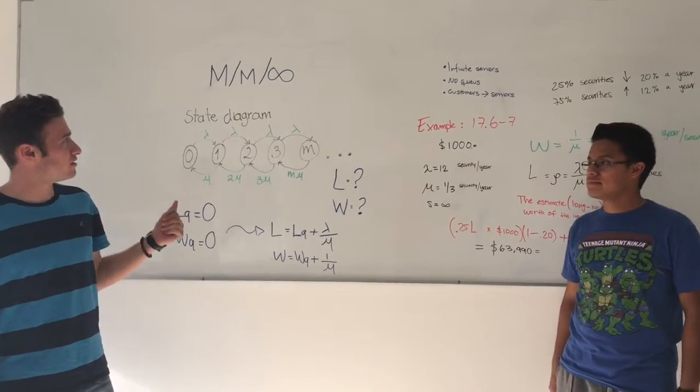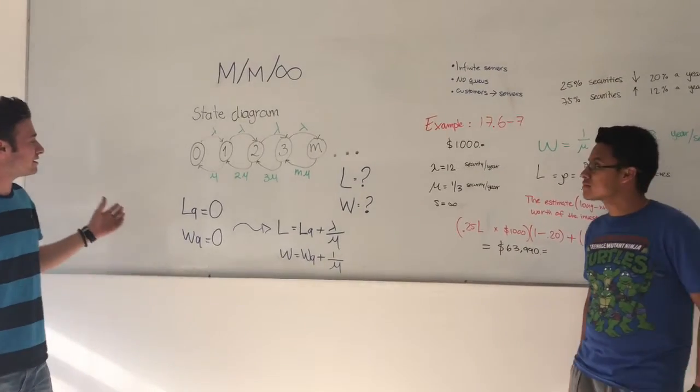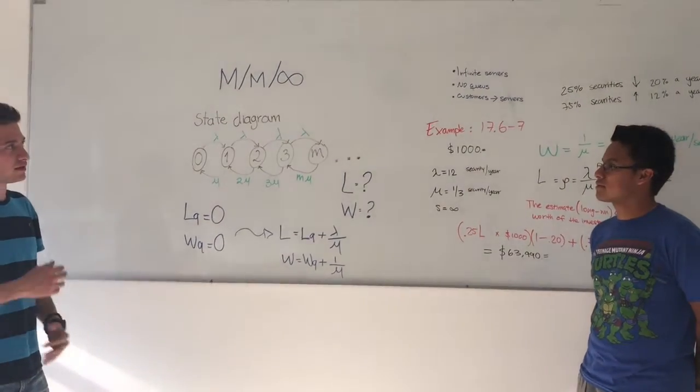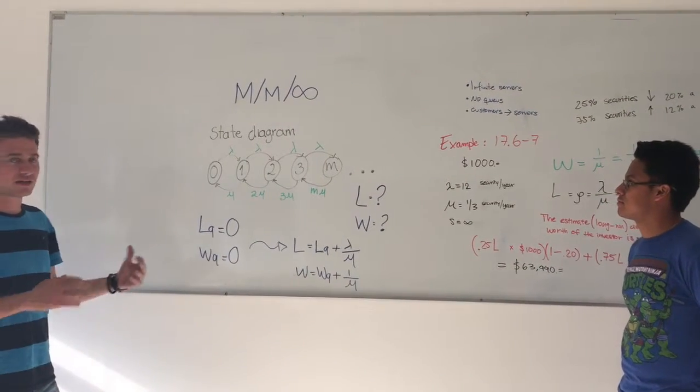So we are going to explain the M/M/Infinity Queue model system. For example, in this model the servers are infinite, that's why we don't have any queues.